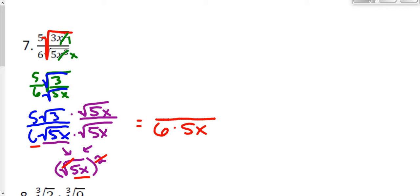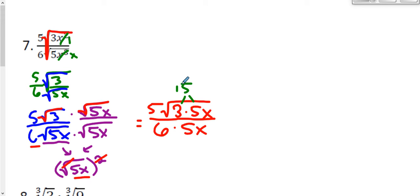In the numerator, I can't get rid of my radicals, but I can combine them. Because they're both square roots — the square root of 3 and the square root of 5x — I can combine those under one radical: the square root of 3 times 5x. I can multiply 3 and 5 together to get 15, and since 3 is prime, 5 is prime, and x is by itself, there are no doubles, so the square root stays. I also notice I have a 5 on top and on bottom that can cancel.